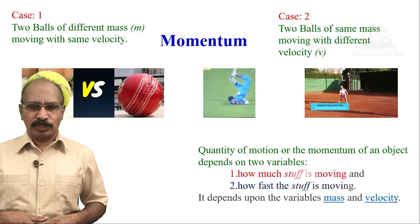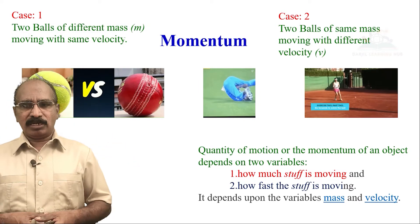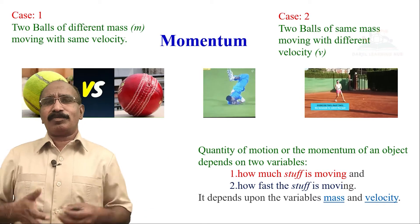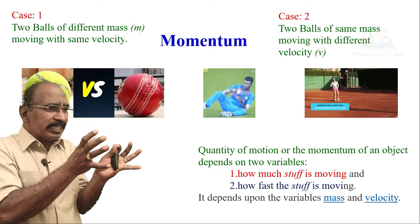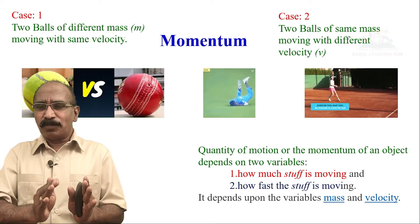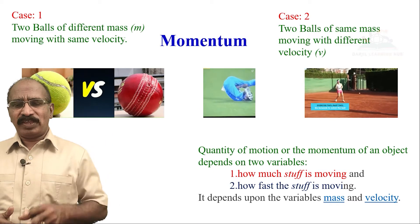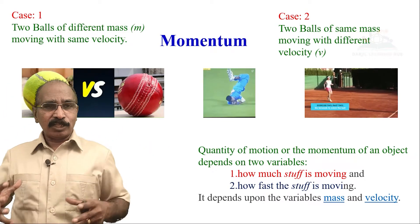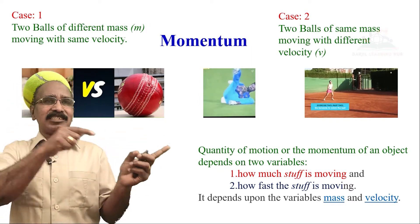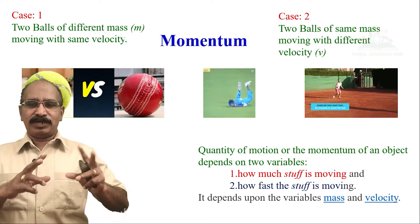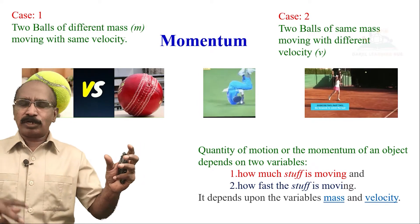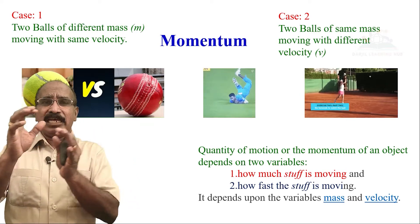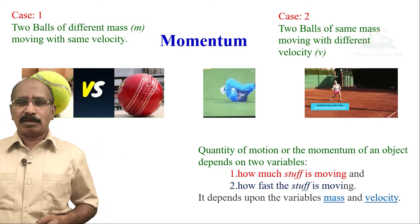If you are talking about the quantity of motion — or the momentum of an object — it depends on two variables: one is how much stuff is moving, and another one is how fast the stuff is moving. Therefore, momentum depends upon the mass of the object as well as the velocity of the object.